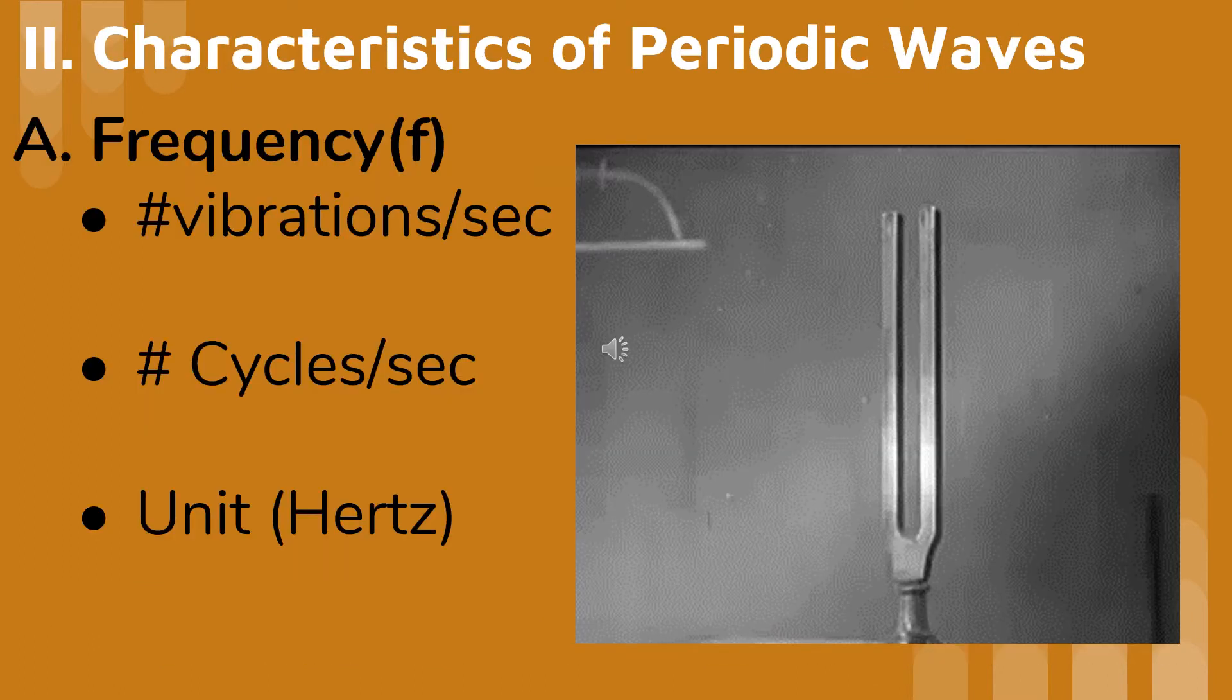The frequency of a wave is the number of vibrations per second, or cycles per second, and its unit is hertz. The frequency of a wave is a measure of how frequently a wave passes a given point. The frequency of a wave is equal to the frequency of its source.